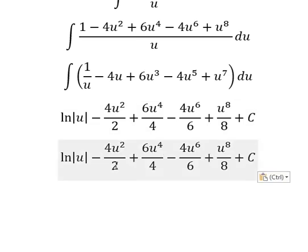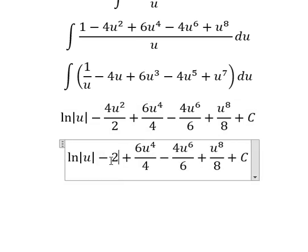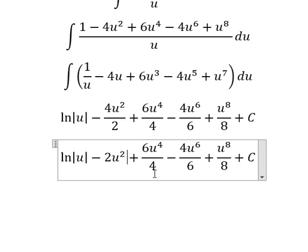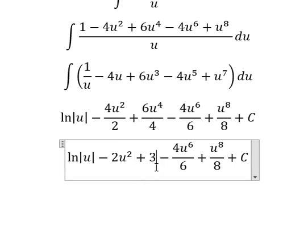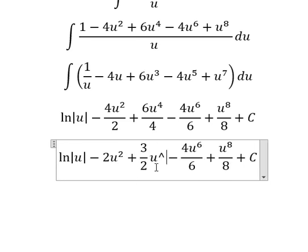Now we simplify: 4 divided by 2 equals 2. 6 divided by 4 equals 3 over 2. 4 divided by 6 equals 2 over 3.